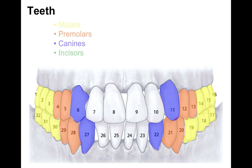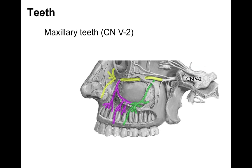And then our canines: teeth 6, 11, 22, and 27. And then finally our incisors: 7 through 10, and 23 through 26. Our molars and premolars are for grinding, and the canines are for ripping, as the incisors are for cutting food. Our molars 1, 16, 17, and 32 are known as wisdom teeth because they're usually the last ones to come in.